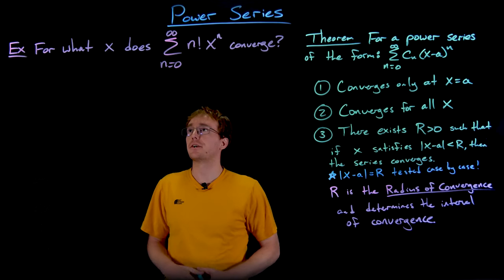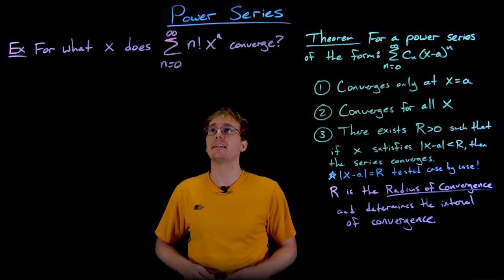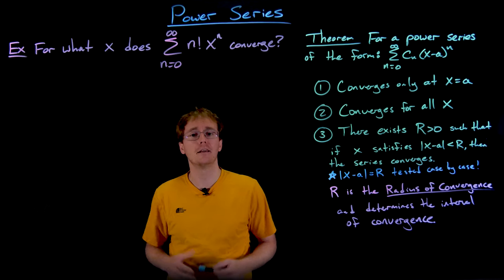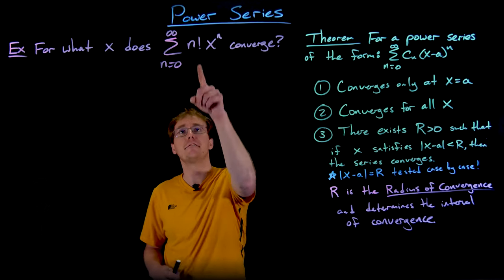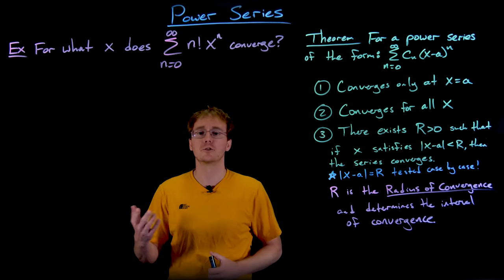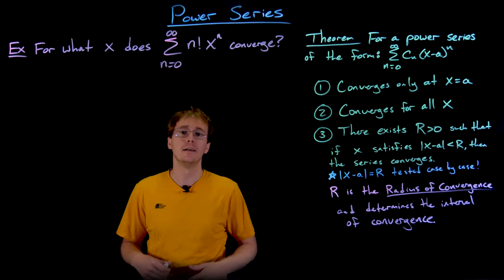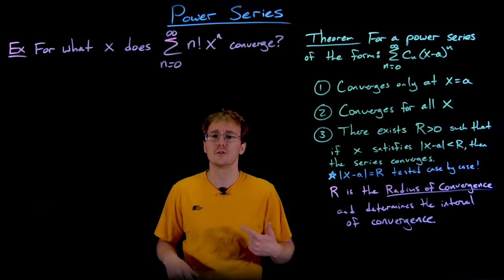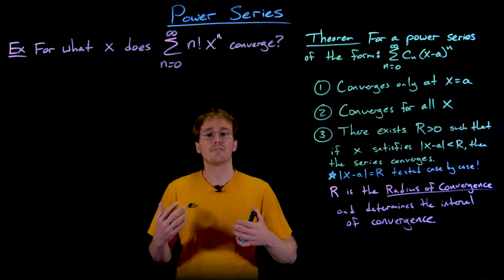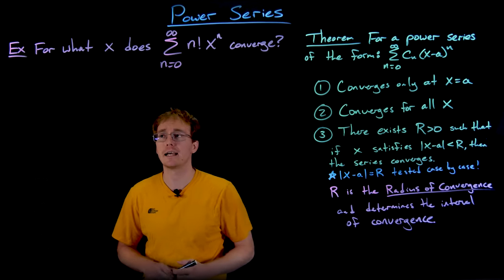For our next example, let's figure out for which values of x the power series — the sum from n equals 0 to infinity of n factorial times x to the power of n — converges. Remember, n factorial is the product of all integers from 1 up to n. So 4 factorial is 1×2×3×4, and 5 factorial is 1×2×3×4×5. To find the interval of convergence, we have to do the ratio test.